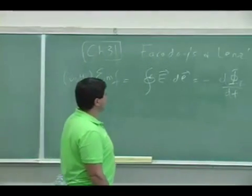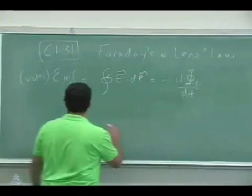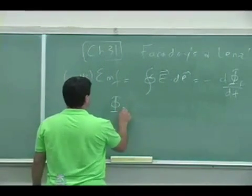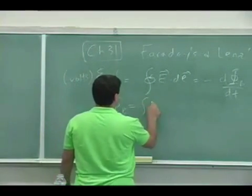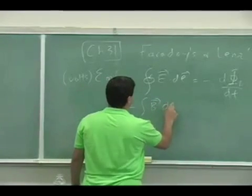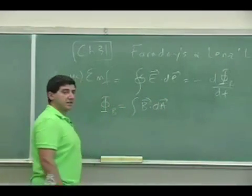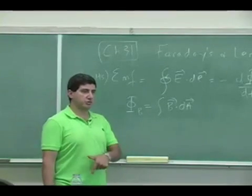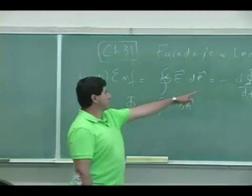Okay, let's define, first of all, what magnetic flux is. Magnetic flux is the integral of B dotted into dA, just like electric flux was the integral of E dotted into dA.